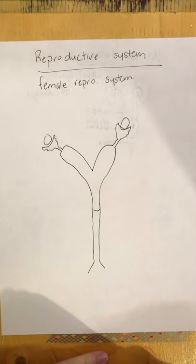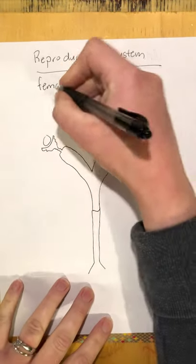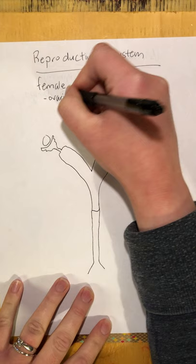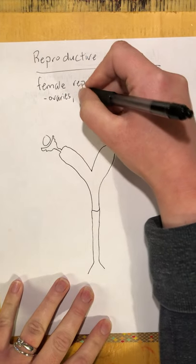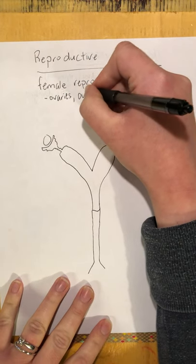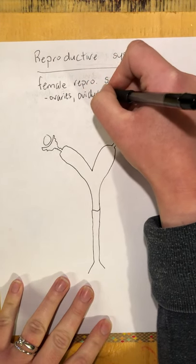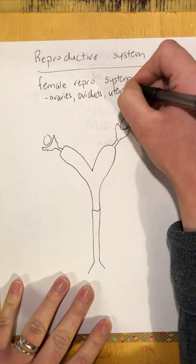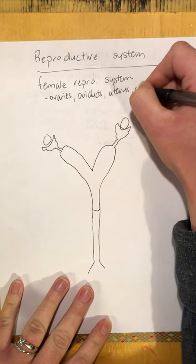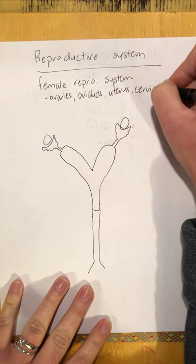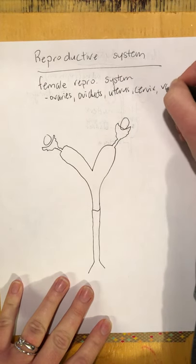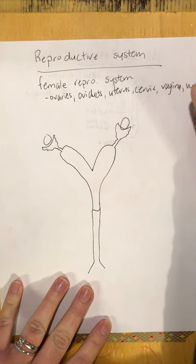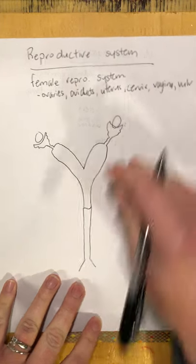The female reproductive system consists of ovaries — two ovaries — two oviducts, the uterus, the cervix, the vagina, and the vulva.